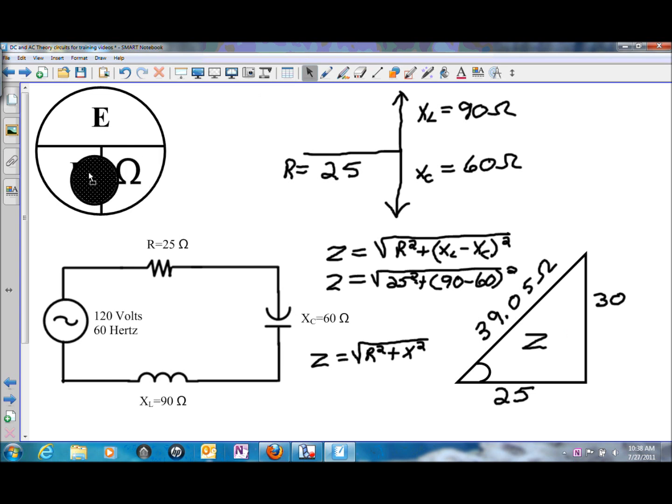So now that we have the total opposition to current flow, we can use Ohm's law and solve for the total current. With the current being the same at all points in a series circuit and being a reference, we only have to solve for it once.